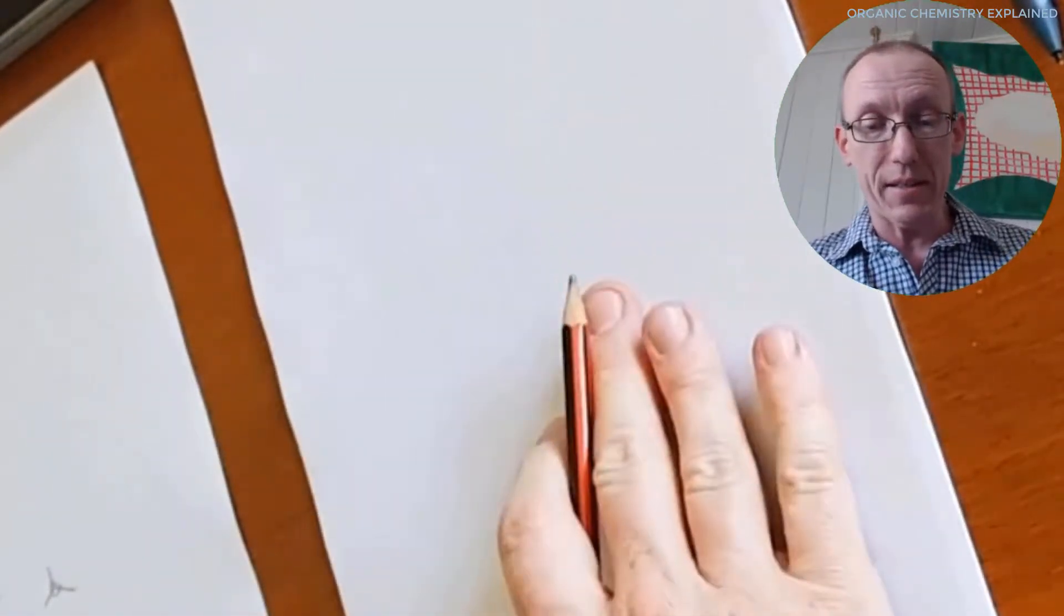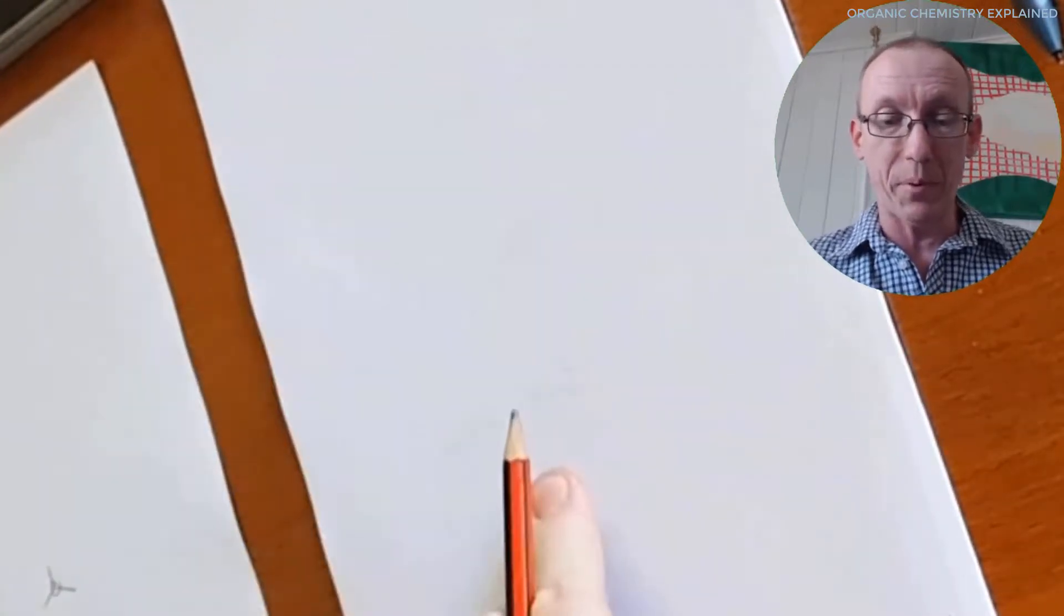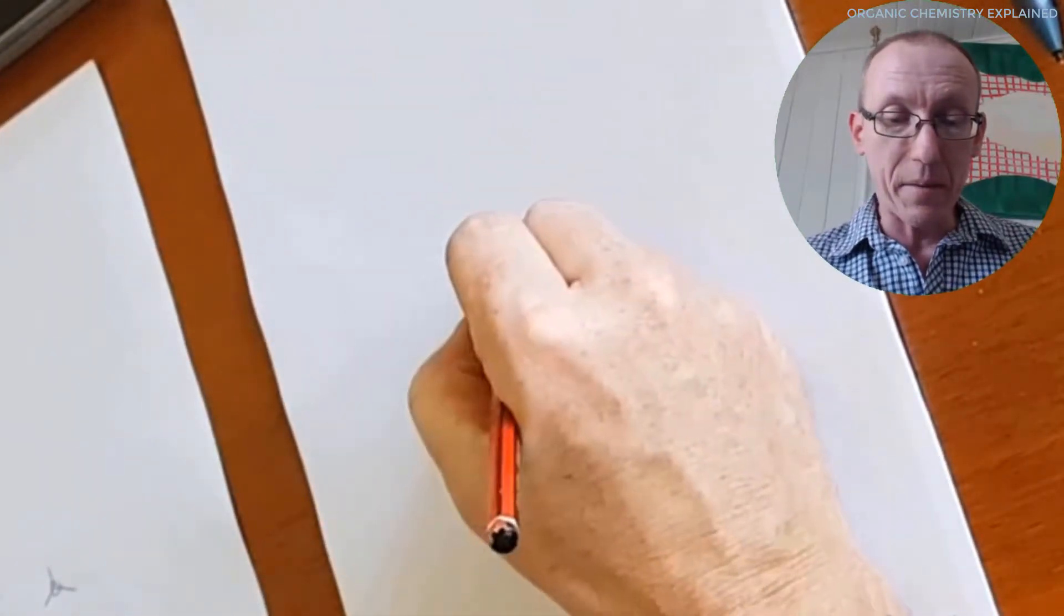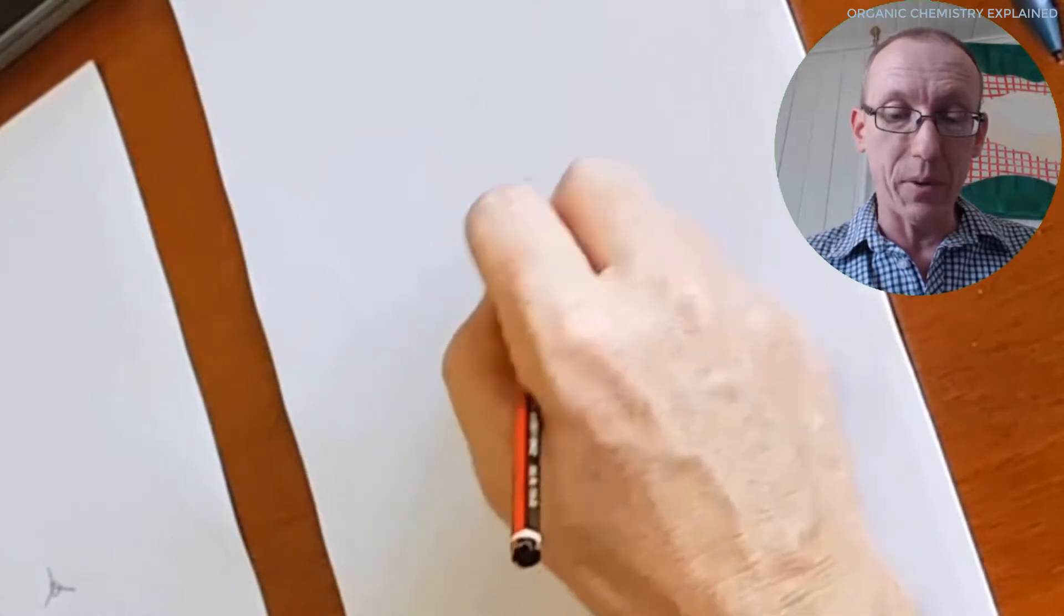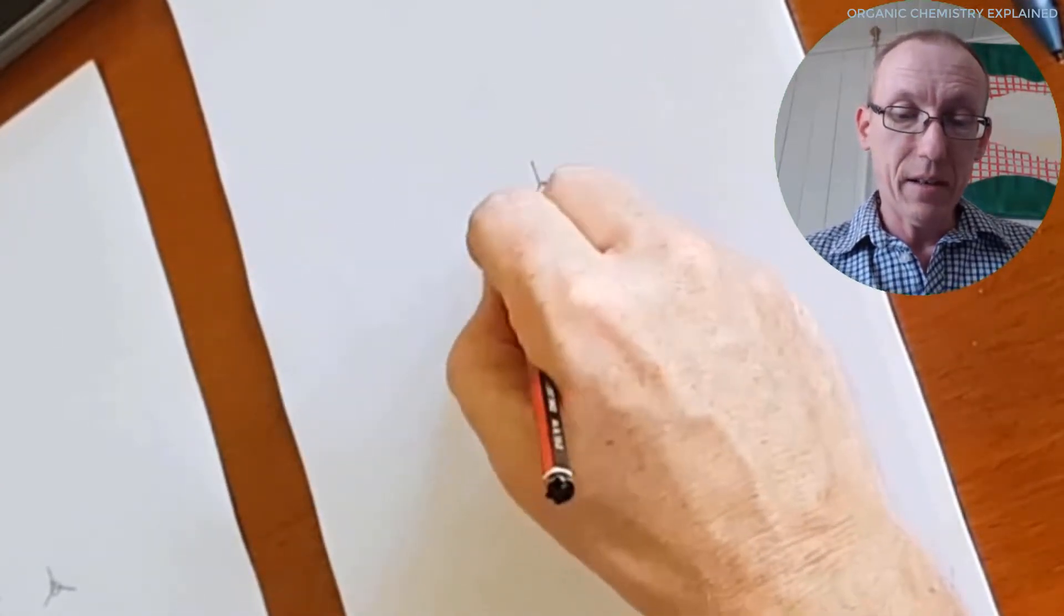Once again, my printer has an issue with the toner at the moment. So there's a little bit of a problem with the printing here. But you may be able to see that there's the white lines here. We can draw our structures from that.